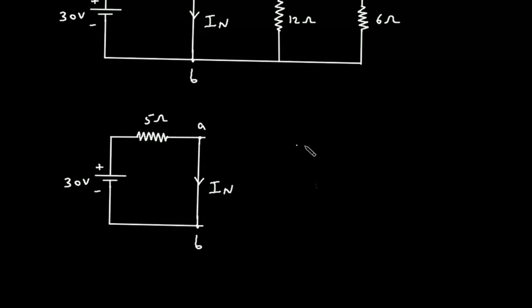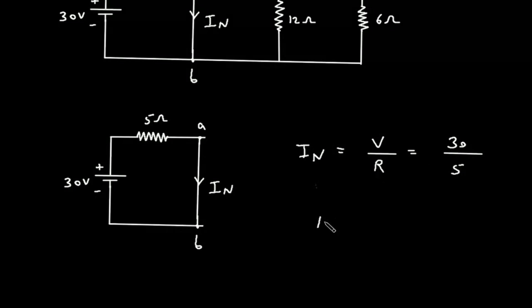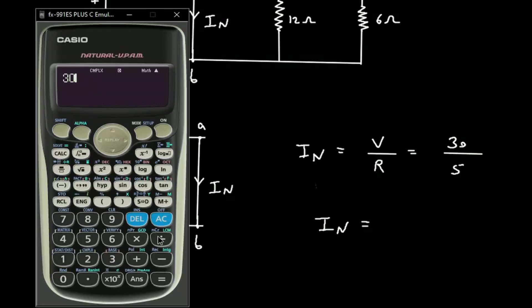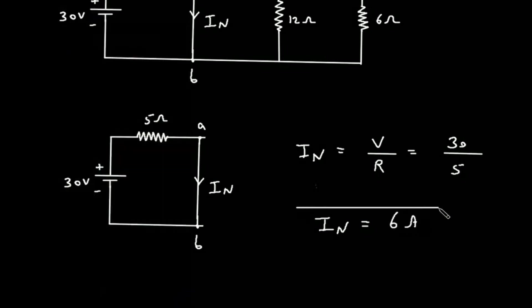Now we can simplify this In by using Ohm's law. In is equal to V divided by R. Here V is 30 volt and R is 5 ohm. Therefore, In is equal to 30 divided by 5, which is 6 ampere. So 6 ampere is the value for In.